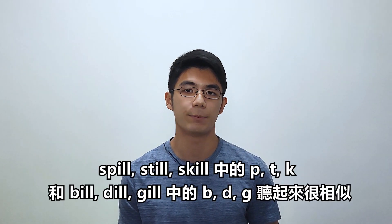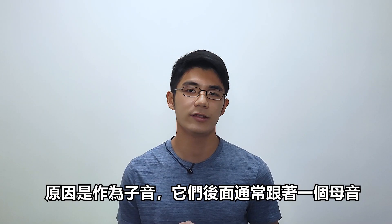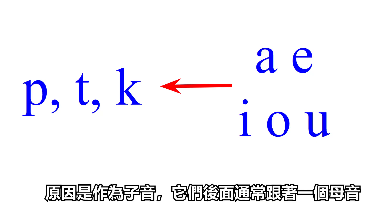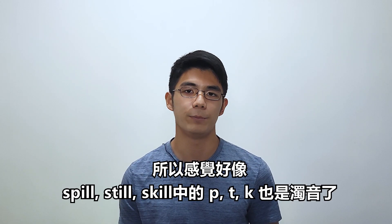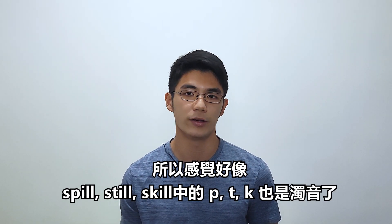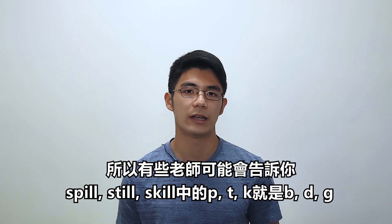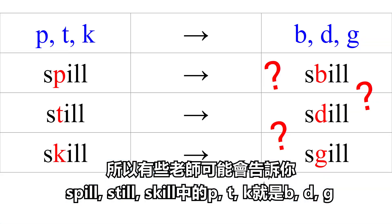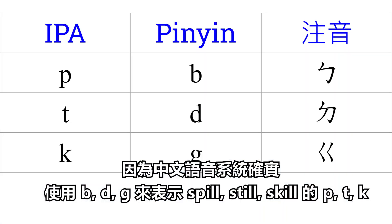However, sometimes you may find that the PTK as in spill, still, skill and the BDG as in bill, dill, gill sound so similar. The reason is that as consonants, they're often followed by a vowel, and vowels are always voiced. So it feels as if the PTK as in spill, still, skill are also voiced, which eliminates the only difference between the two sets. So some teachers may tell you that the PTK as in spill, still, skill are actually BDG. Well, technically they're not wrong, as the Chinese phonetic system does use BDG to represent the sound as in spill, still, skill.